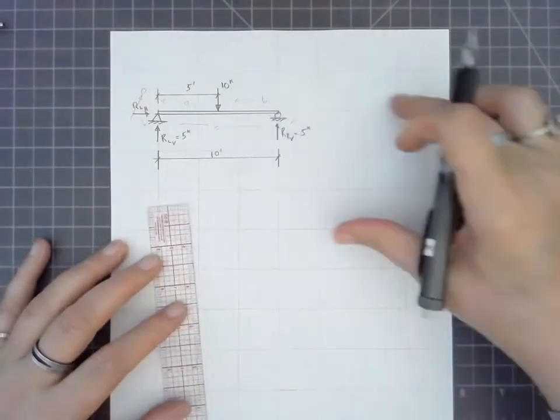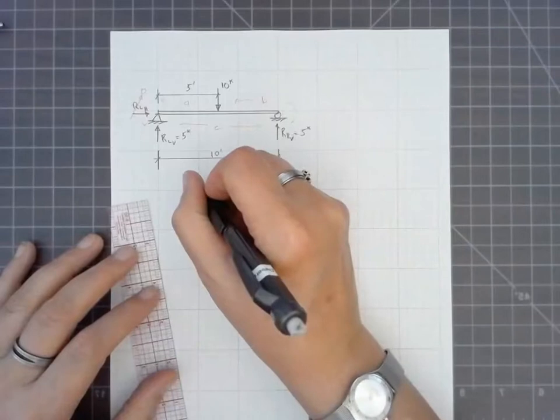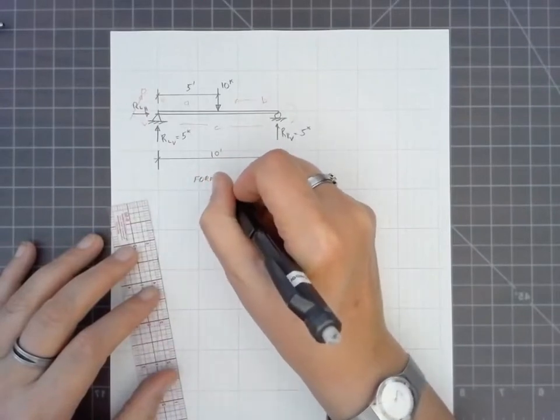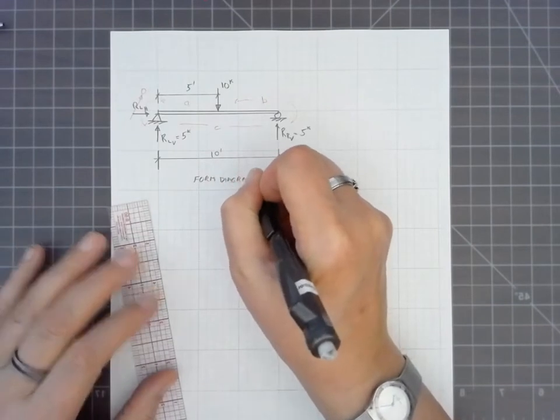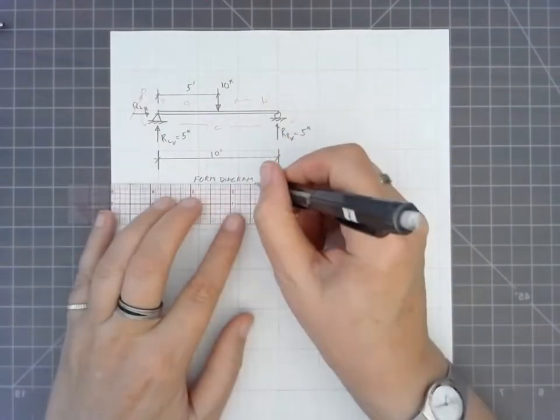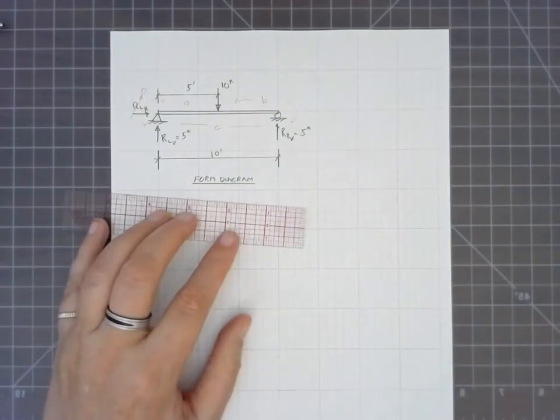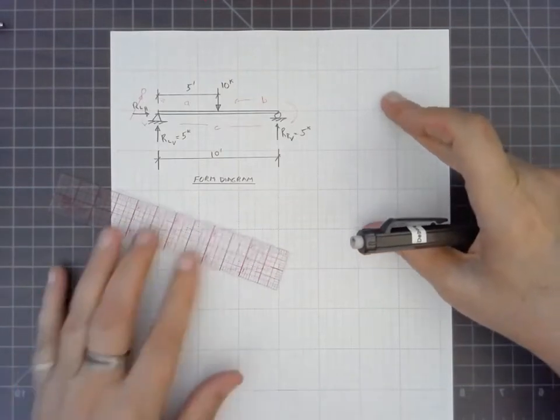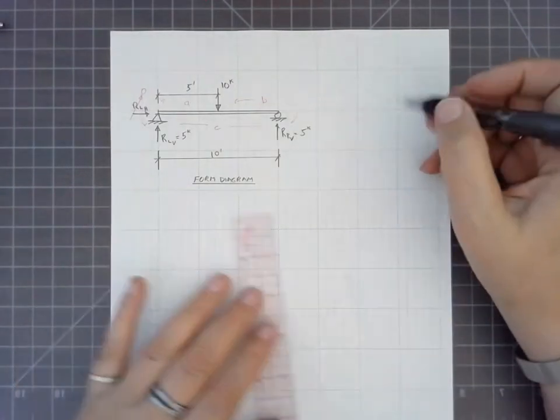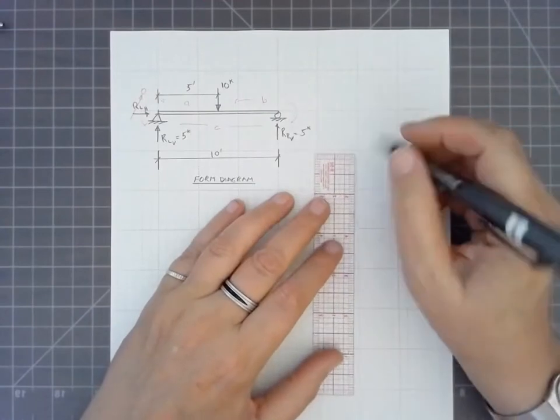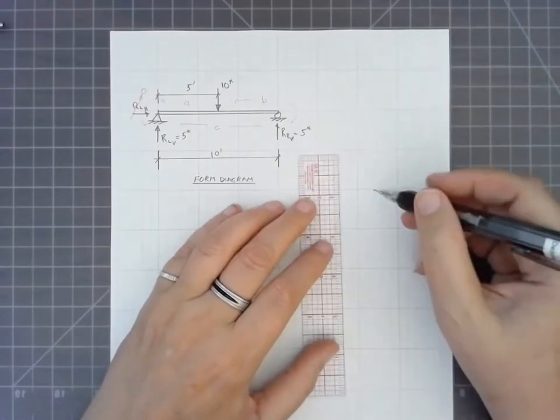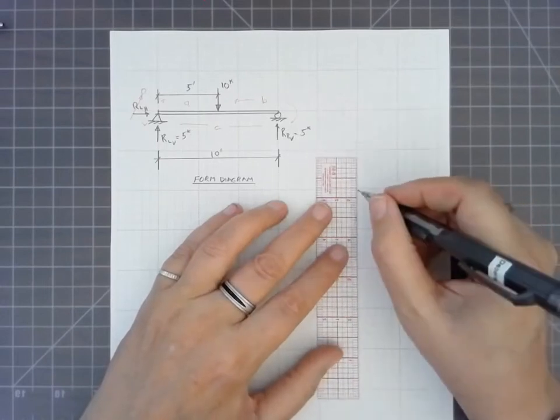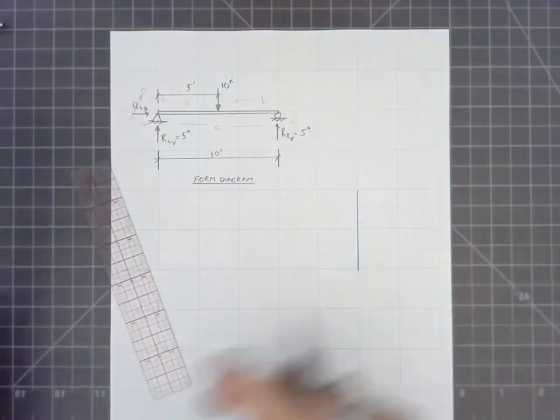Now, this works with a diagram. So, this is what we call the free body diagram. We call it a form diagram. And we work this in conjunction with our force polygon, which itself is drawn to a specific scale. So, we're going to have a graphic over on the right-hand side here that represents the forces. So, we have a downward force of 10 kips.